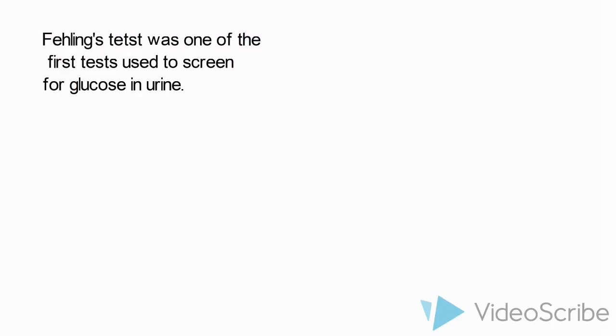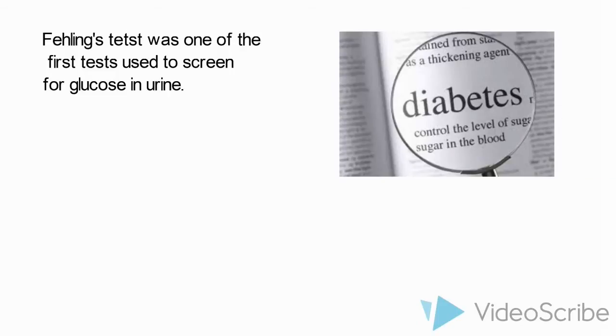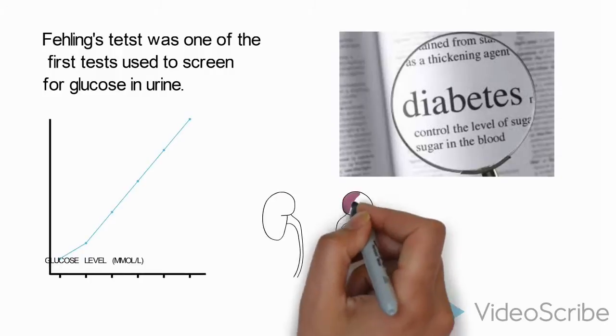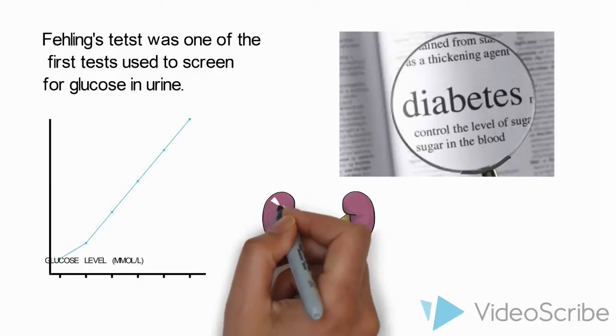Fehling's test was one of the first tests used to screen for glucose in urine detecting diabetes mellitus. Sugar is not normally found in the urine, but when blood sugar levels rise above the tolerable limit, the kidneys release some of the excess sugar from the blood into the urine.